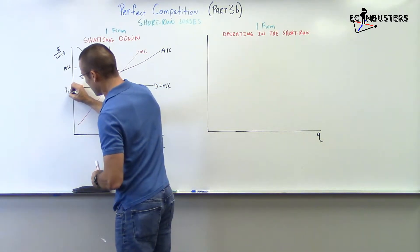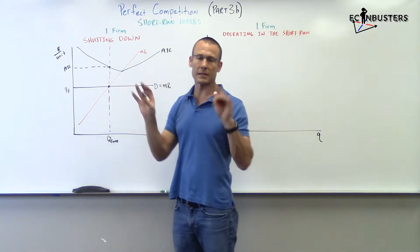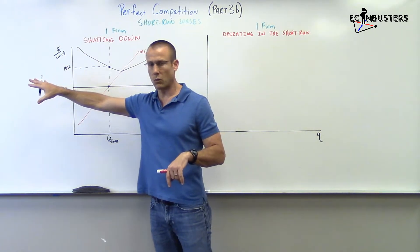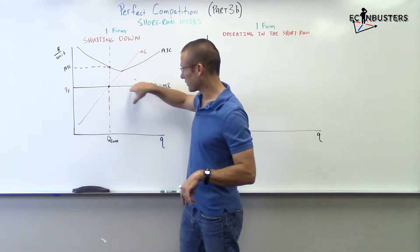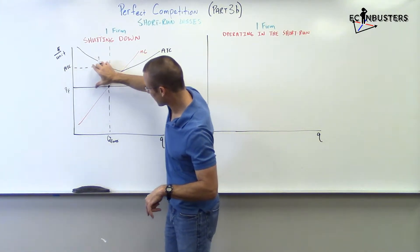Remember, this was the price firm. Yes, it was set in a market, but that's not in this video. A market somewhere set that price. That's the price that they have to take. So, we've got the price. We've got the ATC. We've got losses.